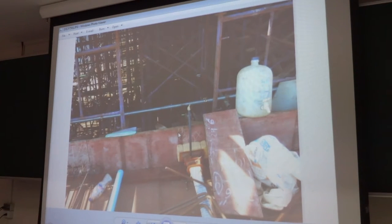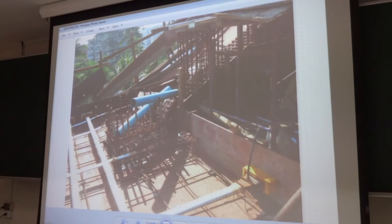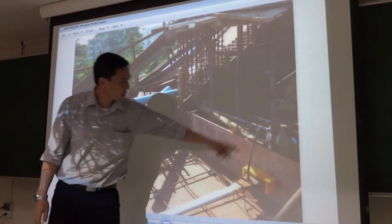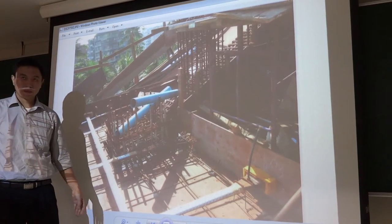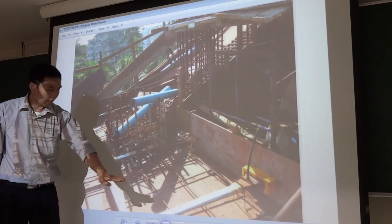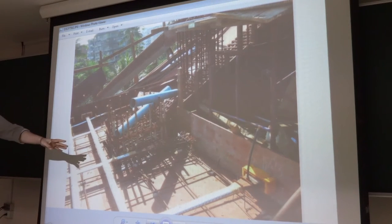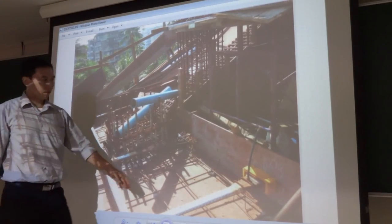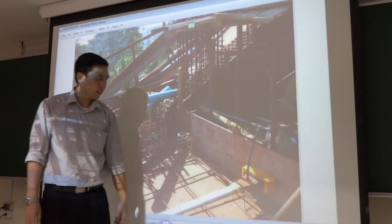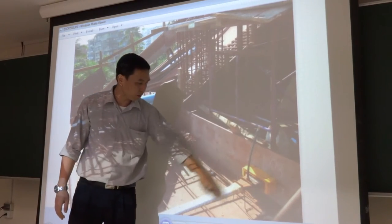These are the anchorages of the tendons. Here you can see there is a pipe — these are the unbonded tendons. After we cast the slab and the concrete hardens, we prestress the tendons from these ends. Then we will grout the concrete from this pipe, and then there will be bonding.